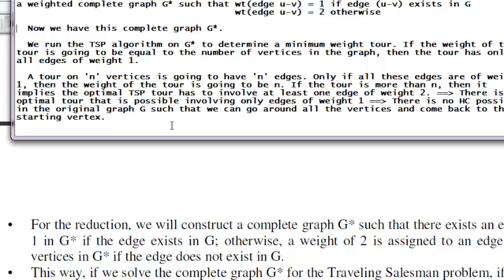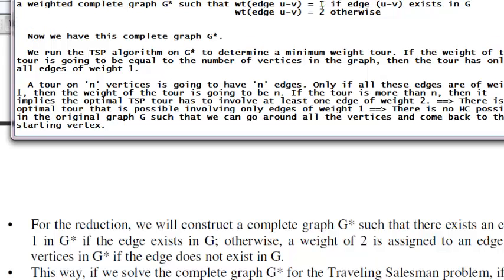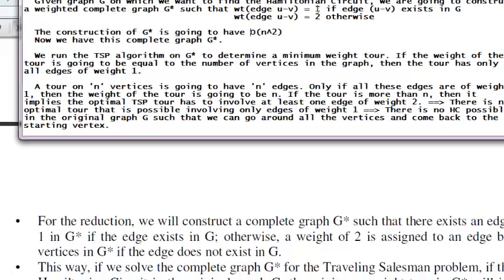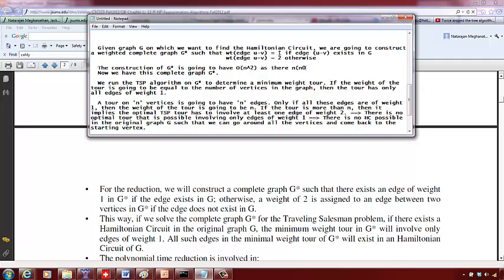This reduction can be done in polynomial time. The time it takes to construct the complete graph G star is O(n²), because there are n(n−1)/2 edges in a complete graph, so we can say the construction takes O(n²) time.